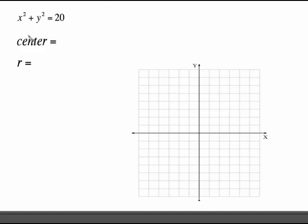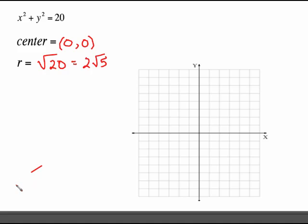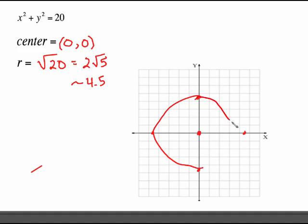For this one, there are no parentheses with x or y, so the center is simply (0, 0). The radius is the square root of 20, which simplifies to 2 times the square root of 5 for the radical. Your calculator says the square root of 20 is about 4.5. Start at (0, 0) and count 1, 2, 3, 4, and a half in each direction, then connect your dots — and there's your circle.